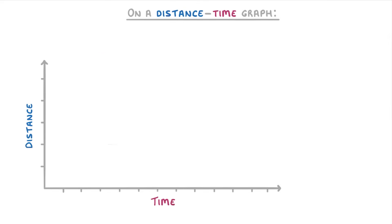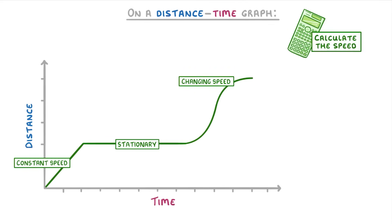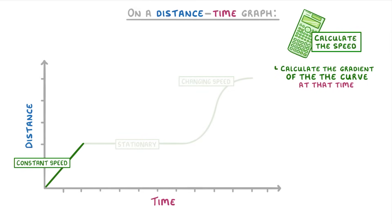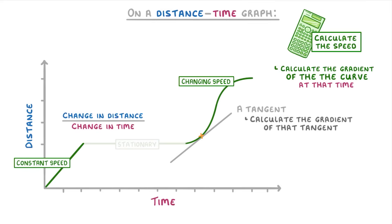So to sum up this video: on a distance time graph, straight lines represent constant speeds, flat lines mean stationary, and curved lines represent changing speeds. And if you want to calculate the speed at any particular point, you need to calculate the gradient of the curve at that point. So if the point lies on a straight line, then you just calculate the gradient of the line by dividing the change in distance by the change in time. If the point lies on a curve, you need to draw a tangent to the curve at that point, and then calculate the gradient of that tangent.